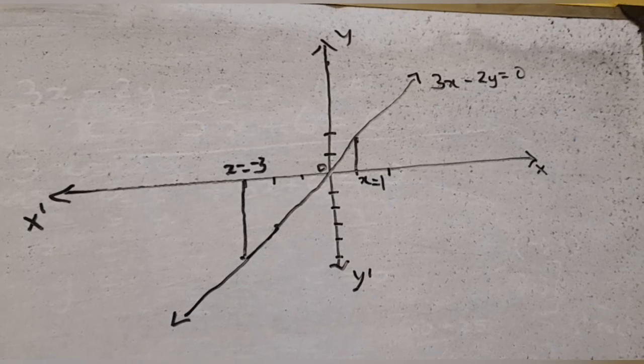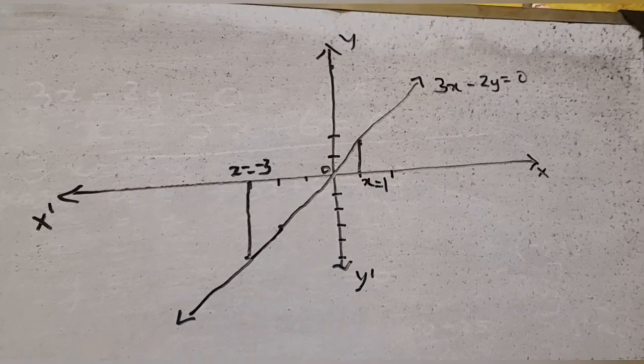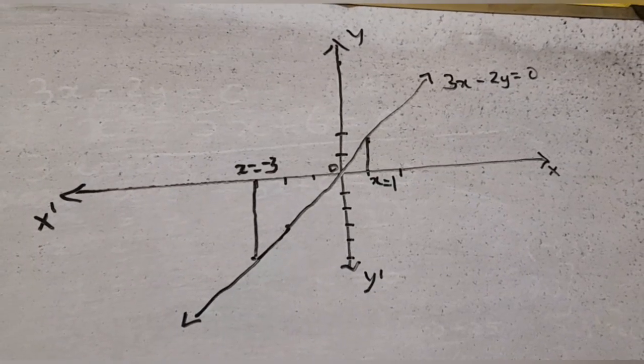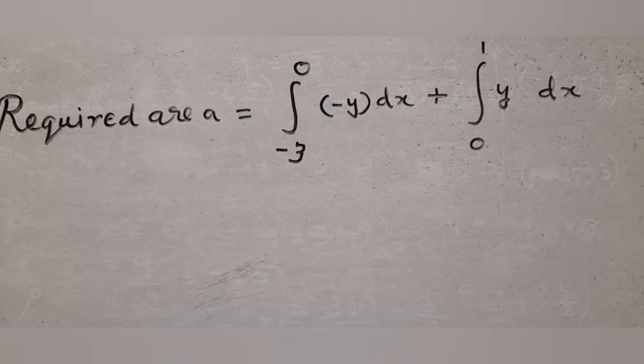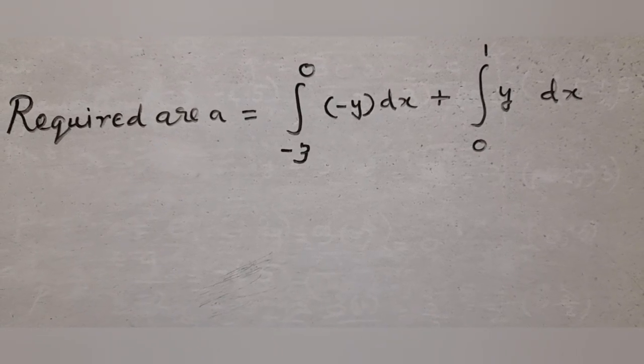we can just use integral 0 to 1 y dx because the line is above the x-axis there. Add the 2 to get the total area.